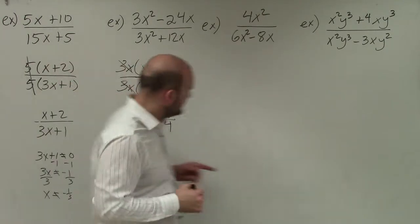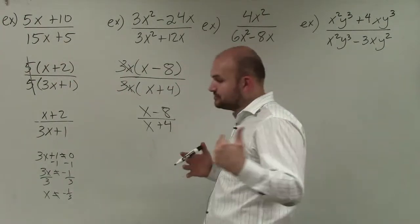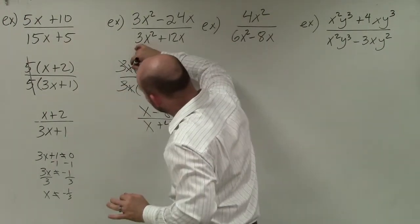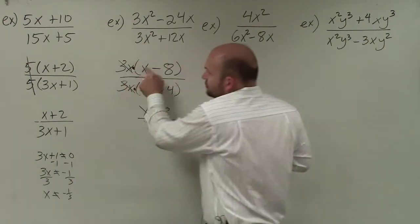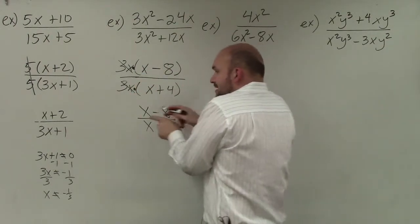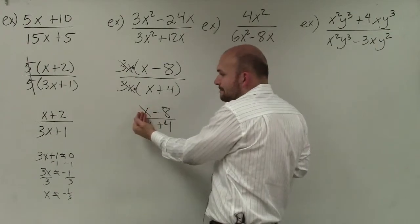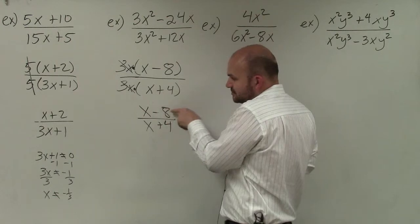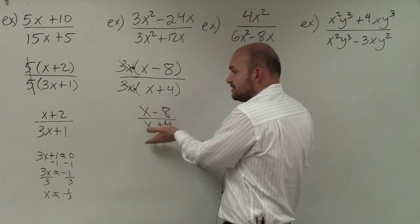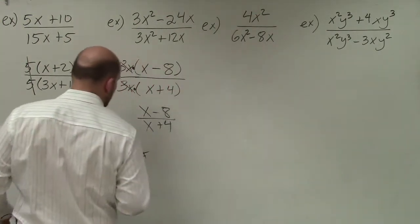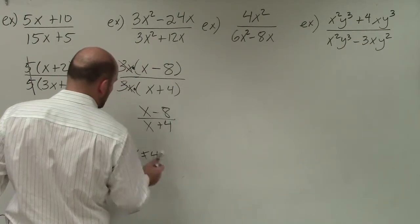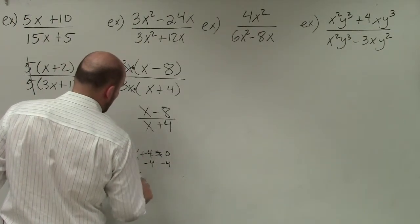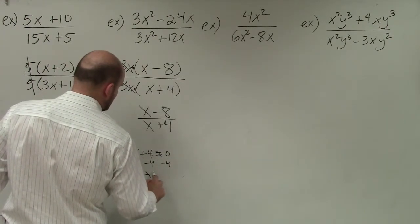It's very important to remember the division property — it only works when terms are exactly the same and separated by multiplication. You can see this is 3x times x minus 8, and 3x times x plus 4. Here, we can't divide out the x's in x minus 8 and x plus 4, because they're not separated by multiplication — they're separated by subtraction and addition. Using the constraint, we say x plus 4 cannot equal 0, so x cannot equal negative 4.